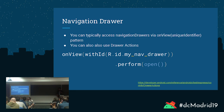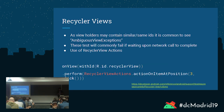For navigation drawers, you don't necessarily need any special code — you're usually just clicking a button to access it. But there is the option of using drawer actions. Here's an example: onView by ID, perform open, and it will automatically open the navigation drawer. That's just a little bit more easily readable. For all these code examples, I do have links at the bottom if you want to go through them later.